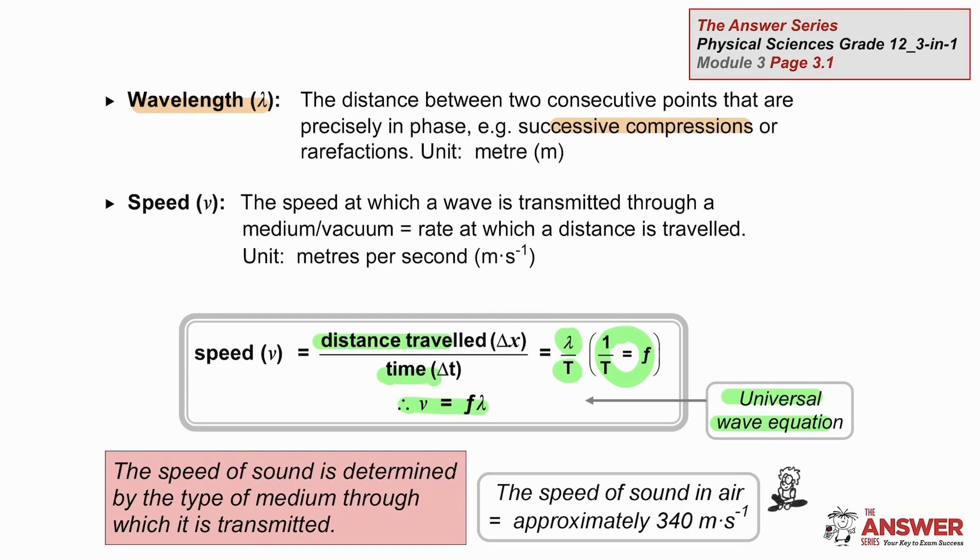For sound through air, speed is about 340 meters per second. It varies slightly for different densities of air. Speeds through materials like water or steel are much higher.